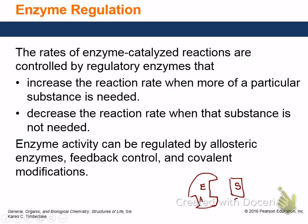Covalent modification is what we were talking about in that first slide — phosphorylation or dephosphorylation. For example, an enzyme for digestion produced in your liver: you're not digesting in your liver, it's in your stomach, so you have to transport the enzyme there. These pre-enzymes — we call them pro-enzymes — need to be modified so they're active, and they're often modified at the site where they're used.